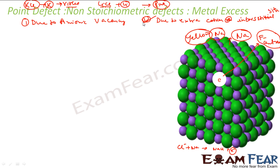And the next type of defect as I told was due to extra cations in the interstitial side. So here we get the defect due to interstitial.